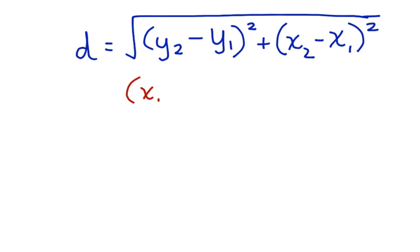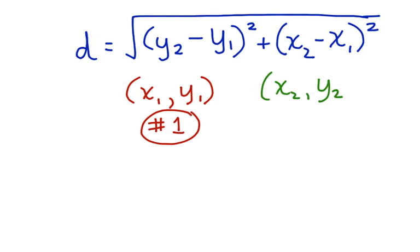So if we put x1 comma y1, that would be the ordered pair of the first endpoint, we can call that endpoint 1. And if we had x2 and y2, that we could say is the ordered pair of the second endpoint of the line segment.